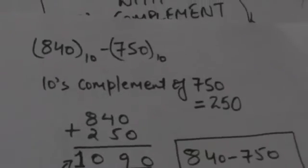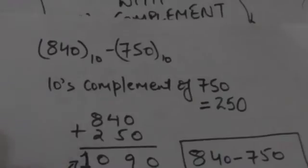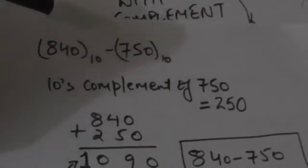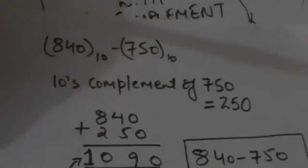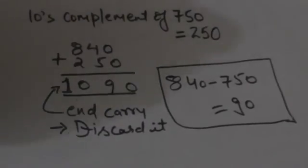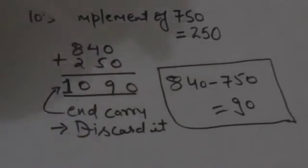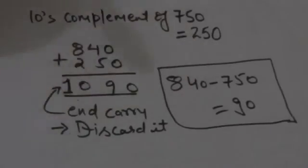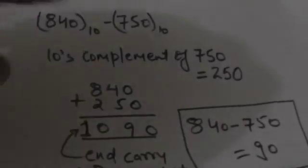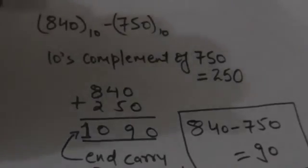Now suppose we have to subtract 750 from 840. Here the base R is 10. First we will find the ten's complement of 750, which is 250, and add it with 840. The result produces an end carry. We will discard this end carry, and whatever is left in the sum is the desired result. After discarding the end carry 1, what is left is 90. So the result is 90 — when we subtract 750 from 840 the result is 90.